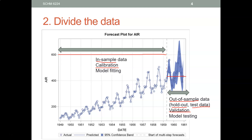You can use the first 700 or so observations to calibrate your model, and those parameter values are based on those first 700 or so observations. Once you have found those values, you're going to use them in your model to predict the values for the holdout sample. That way, the forecast quality in the holdout sample will be more realistic.